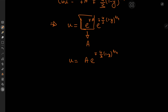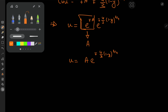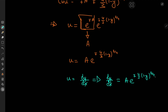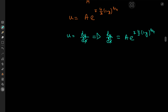This is u in terms of y, but we need y in terms of x — and that is not a difficult task. Since u = dy/dx, we have dy/dx = a · e^(∓(4/3)(1 minus y)^(3/4)), which is just another separable differential equation, solved in exactly that manner.